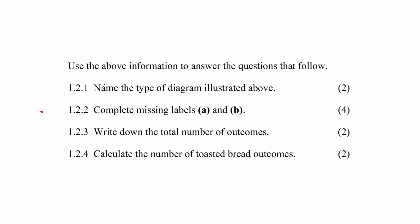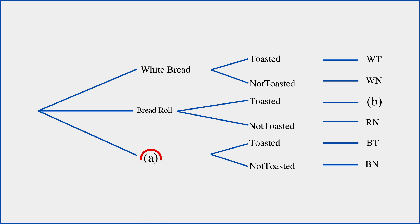In question 1.2.2, you are instructed to find the missing labels A and B. A is brown bread, and B is RT, which is a toasted bread roll.